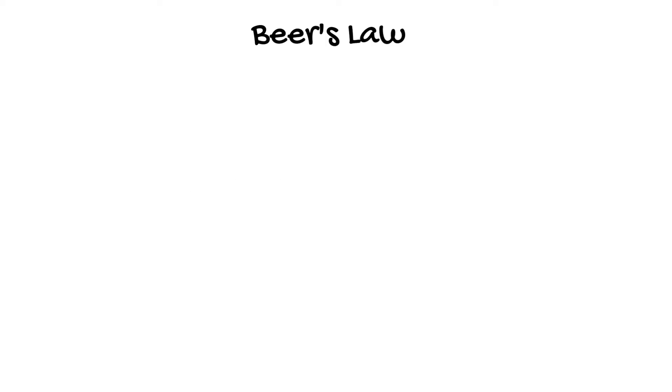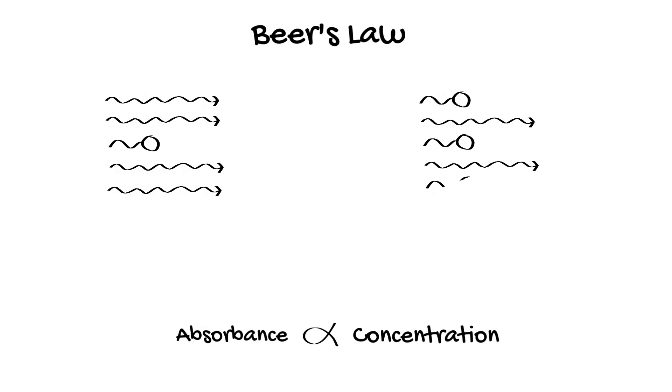Beer's law states that the absorption or attenuation of light as it passes through a substance is proportional to the concentration of that substance. This is how the pulse oximeter calculates the concentration of oxygenated hemoglobin and deoxygenated hemoglobin.